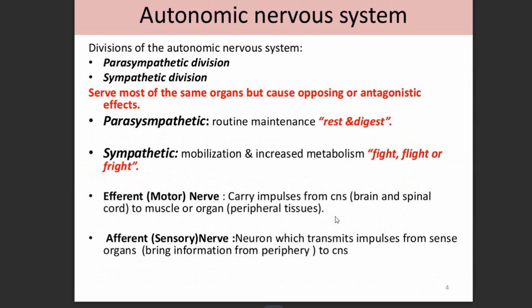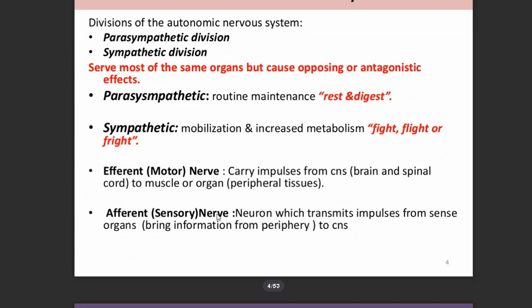The autonomic nervous system is again divided into two parts: parasympathetic and sympathetic divisions. The parasympathetic maintains the body under rest-and-digest conditions, whereas the sympathetic operates under fight-or-flight conditions. Efferent motor nerves carry impulses from the brain and spinal cord to a specific muscle or organ, whereas afferent sensory nerves carry sensory information from organs to the CNS.